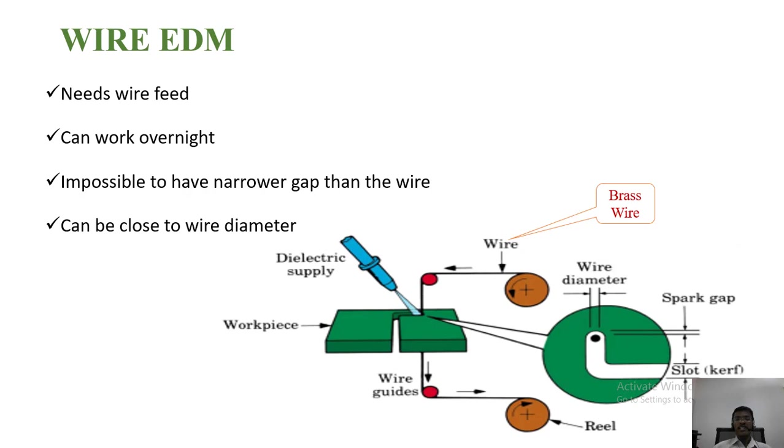This wire EDM needs the wire to cut the object. It can work overnight. It's impossible to have narrower gap than the wire. It can be close to wire diameter. We can machine. For example, if we are using 0.5mm diameter wire, we can create the path of 0.5mm thickness. You can see the thickness clearly in this picture.